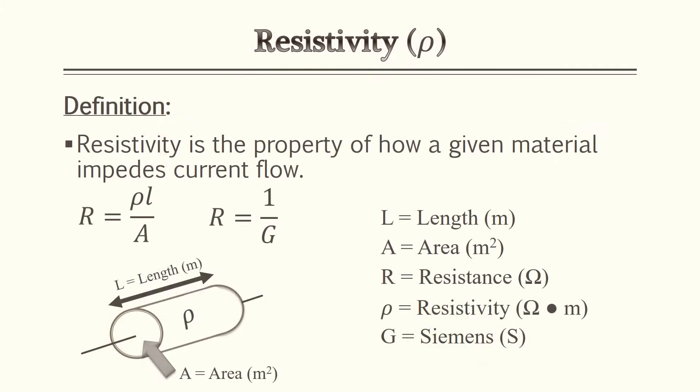The first one we're going to go over is resistivity. Resistivity is the property of how a given material impedes current flow. There are different materials that are going to have different resistivities — copper may be better than zinc, silver should be better than gold, and so on.